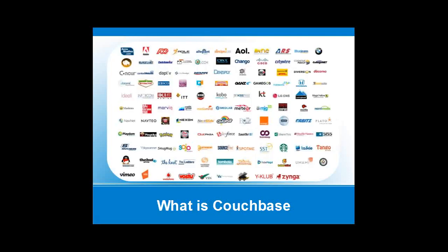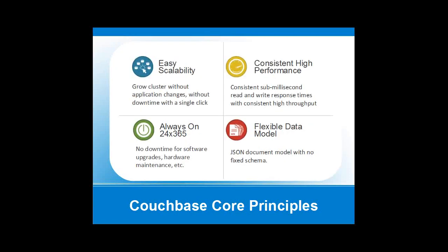There are lots of companies using Couchbase. They even have Adobe on their site. I know that Orbit is a really big company with about 50 servers in their clusters. There's a lot of production scale that Couchbase is handling right now. The four core principles Couchbase talks about are: easy scalability — growing the cluster without needing to change your application or code; it's always on, 24 hours a day, 365 days a year.